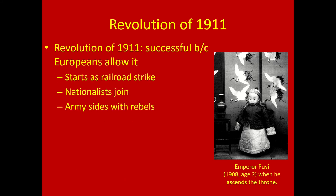Why is the revolution of 1911 successful? Because the Europeans allow it. From the European perspective, the whole purpose of having the Chinese emperor in power was so that he could be a puppet, getting his people to produce and buy certain goods. But since he seems unable to keep order at this point — the emperor is two years old, Emperor Puyi — his regent isn't able to control the country anymore.